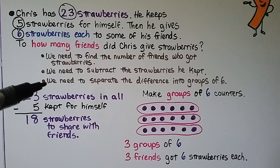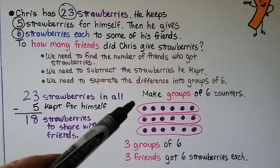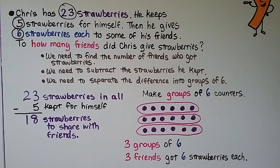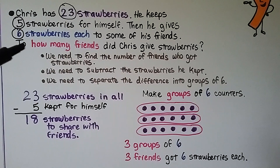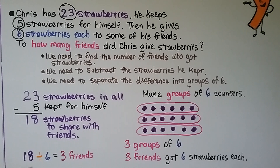We need to separate the difference of 18 into groups of 6. We can make groups of 6 counters and count how many groups we made — we made 3 groups of 6. So 3 friends got 6 strawberries each. We identified the important information, took away the 5 strawberries he kept for himself, then split the remaining 18 between his friends in groups of 6. 18 divided by 6 is equal to 3 friends.